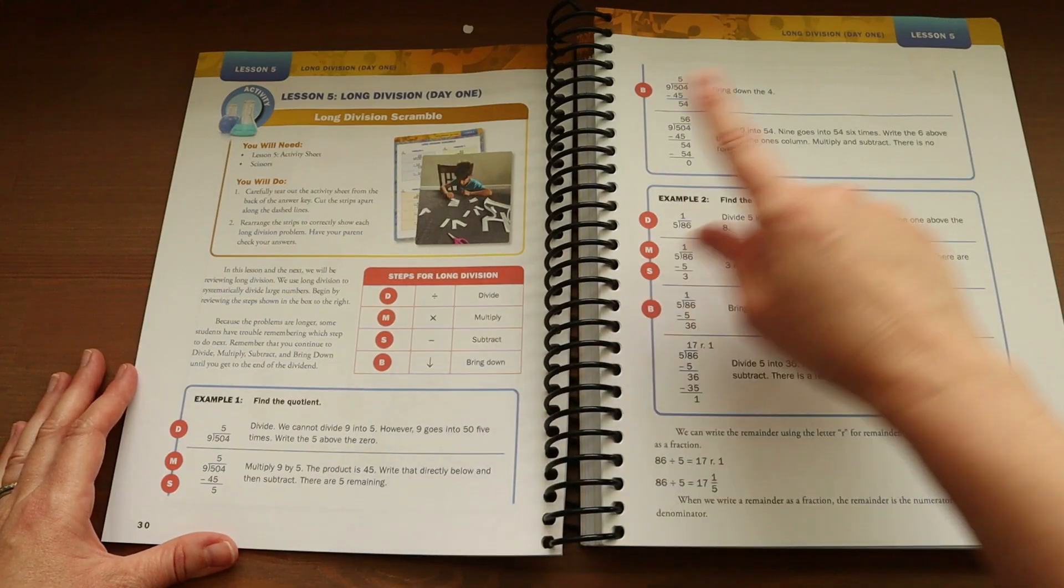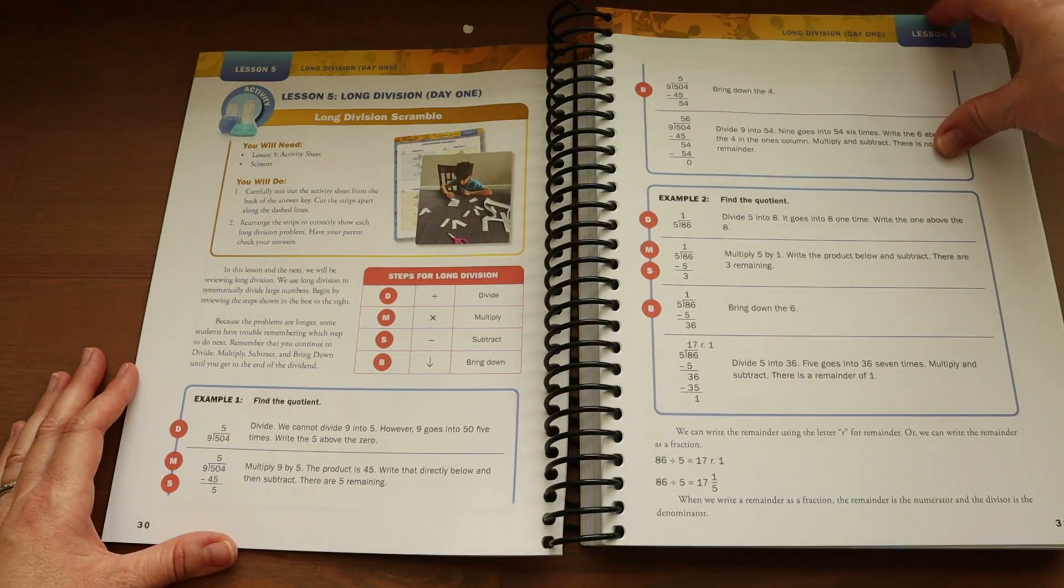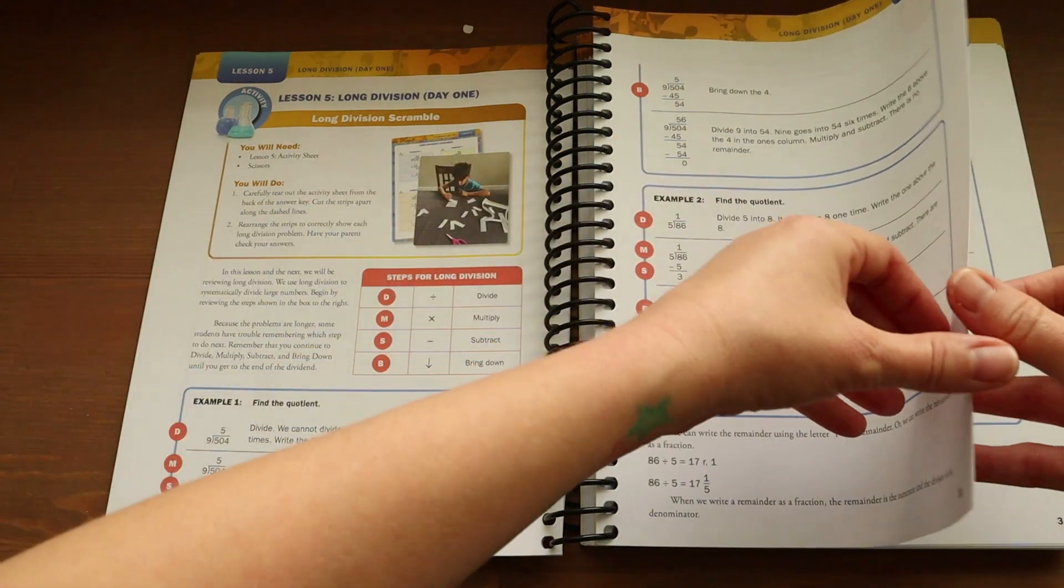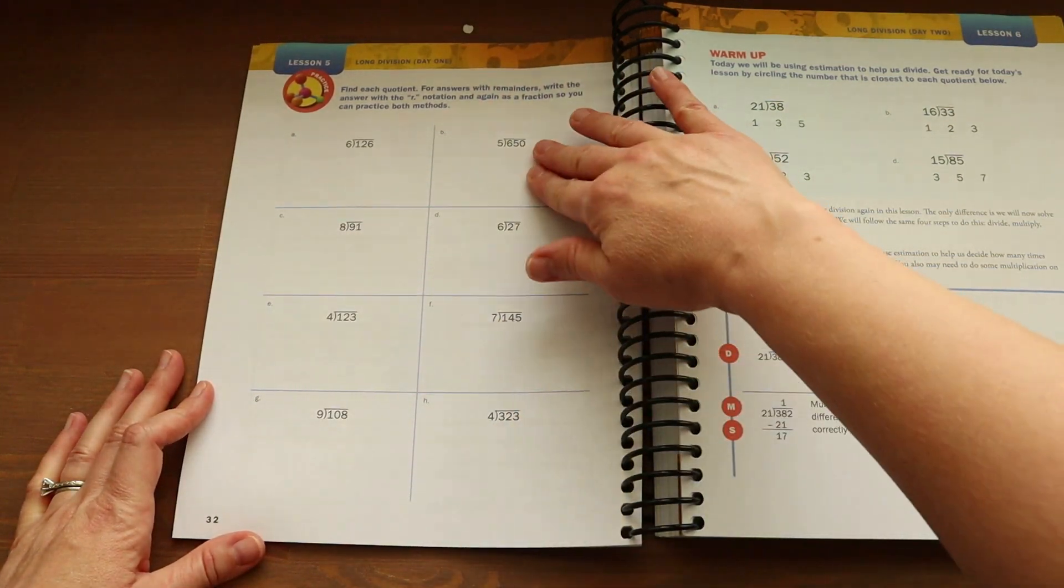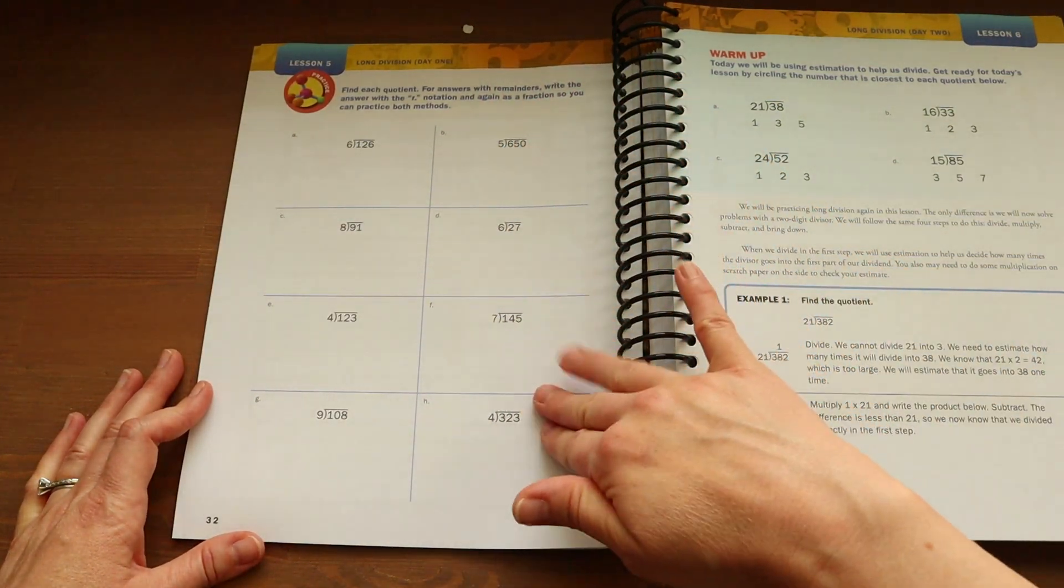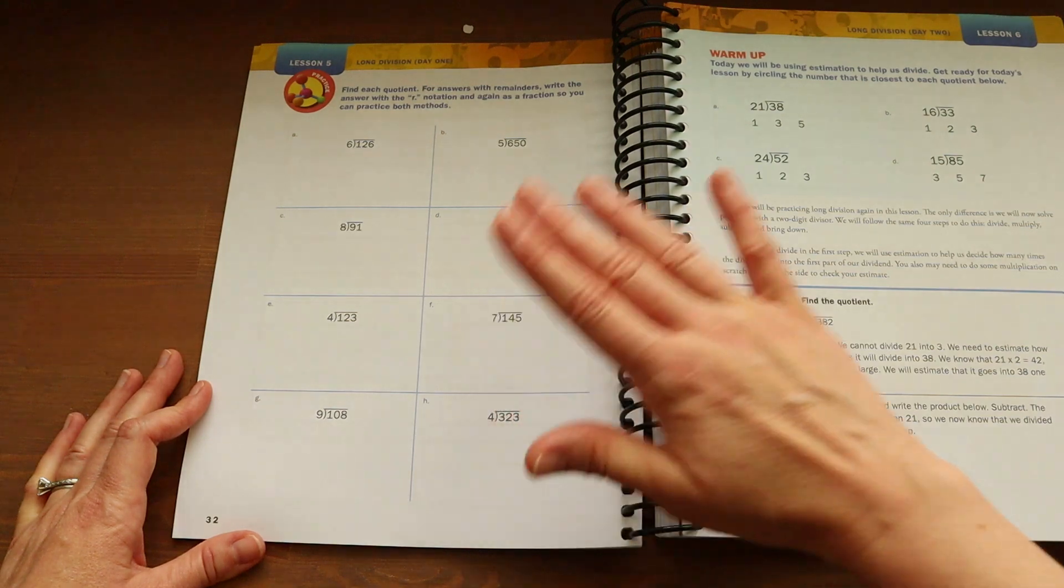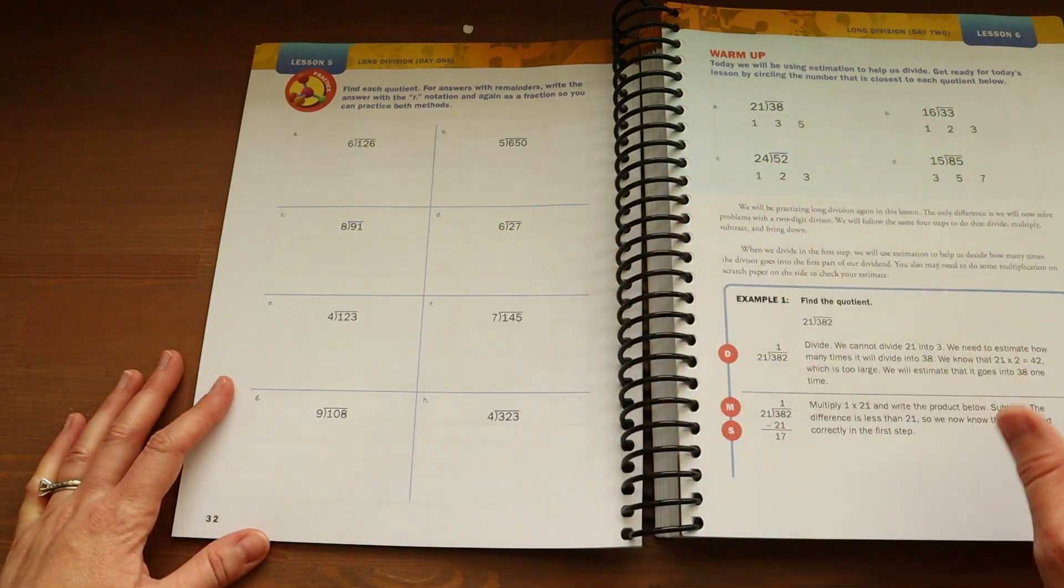And then they jump into two different examples on how to solve a long division problem. And then as far as the actual work that they do that day, here it is. So as you can see, it is quick, straight to the point, no fluff. I absolutely love that. Now, let me jump to the end of the book and show you guys a lesson there.